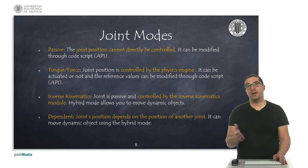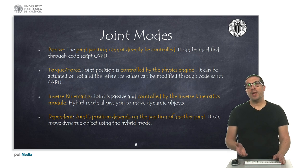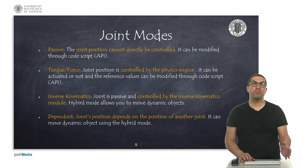On the other hand, joints can be dynamic if we set the torque force mode, so they can be controlled through the physics engine. They can be actuated or non-actuated and the reference values can be set through programming scripts too.